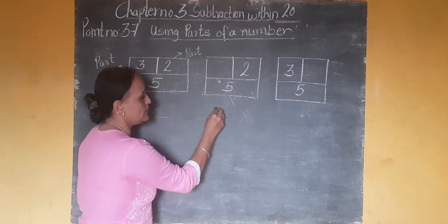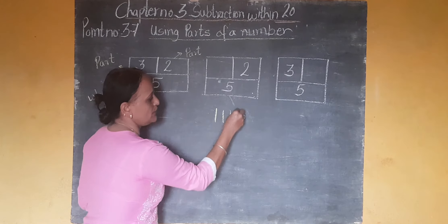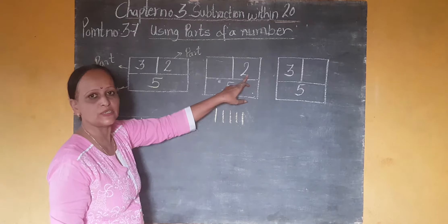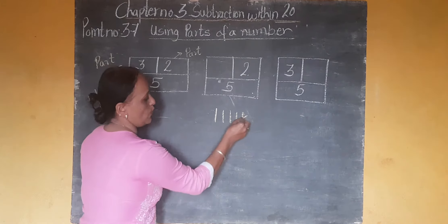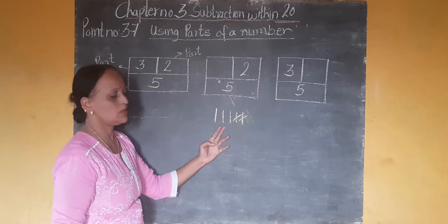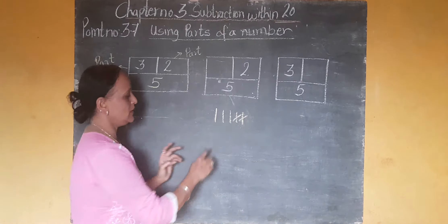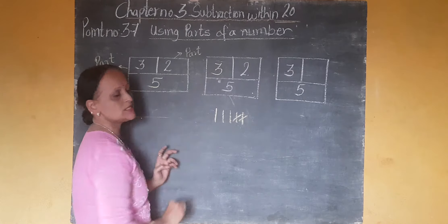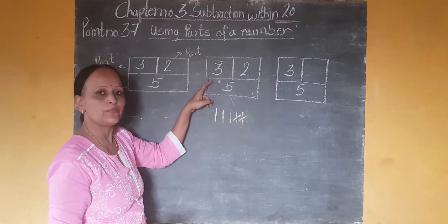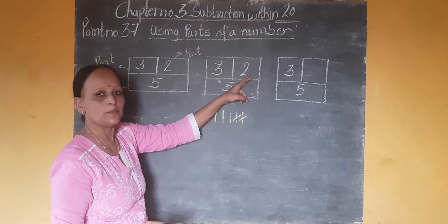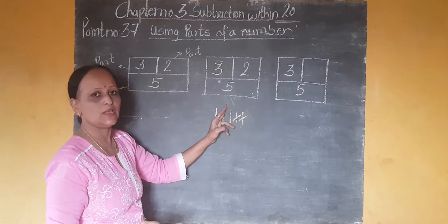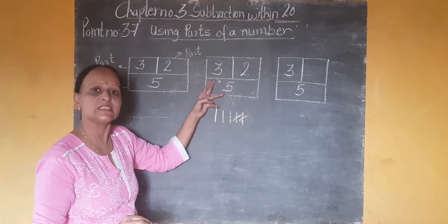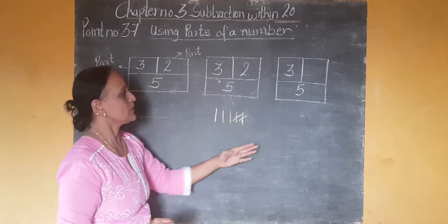I am going to draw 5 lines: 1, 2, 3, 4, 5. From 5, you have to subtract 2, so cross 1 and 2. How many lines are left? 1, 2, 3. So your part is 3. So 3 plus 2 equals 5, or when you subtract 2 from 5, your answer is 3.